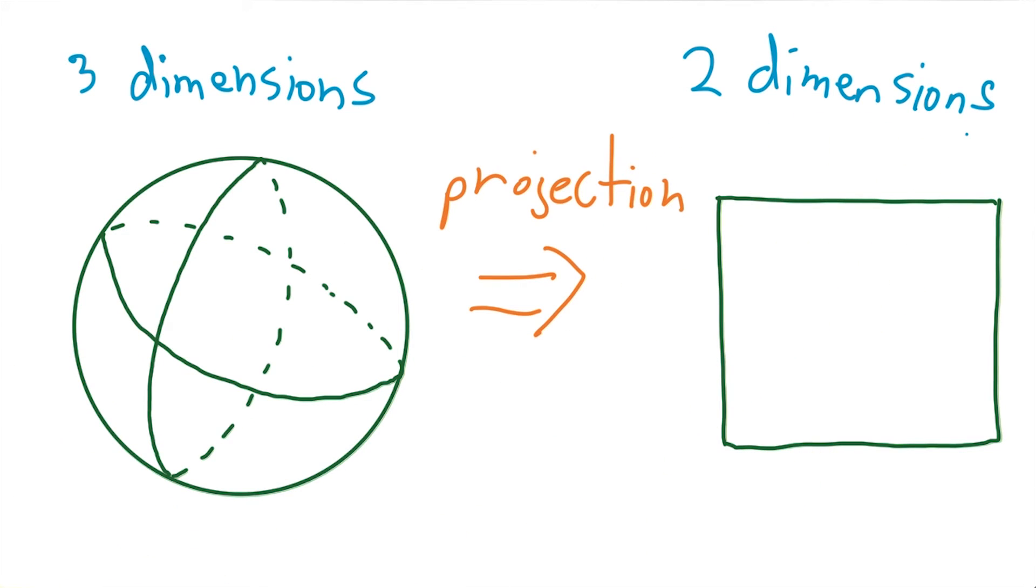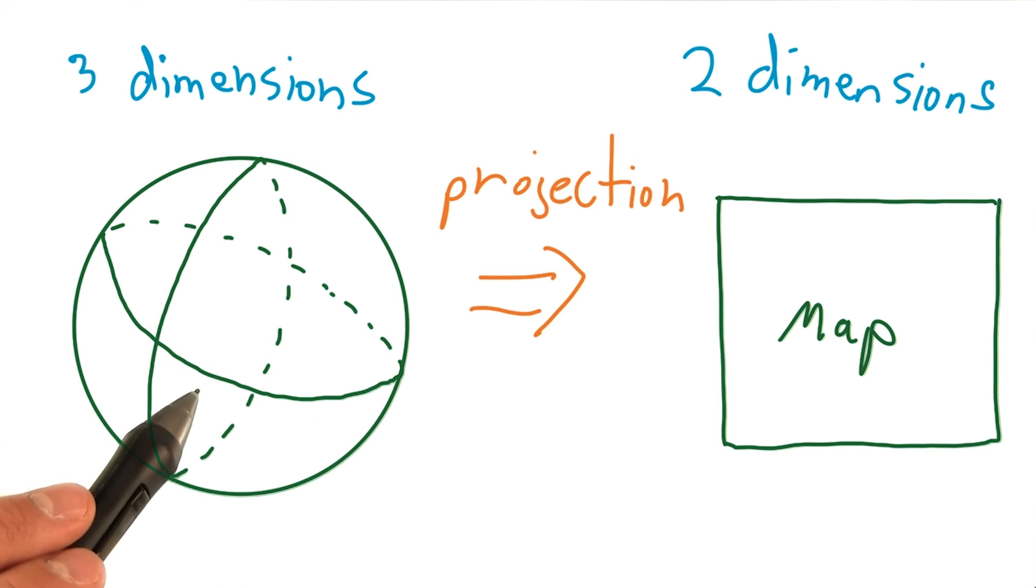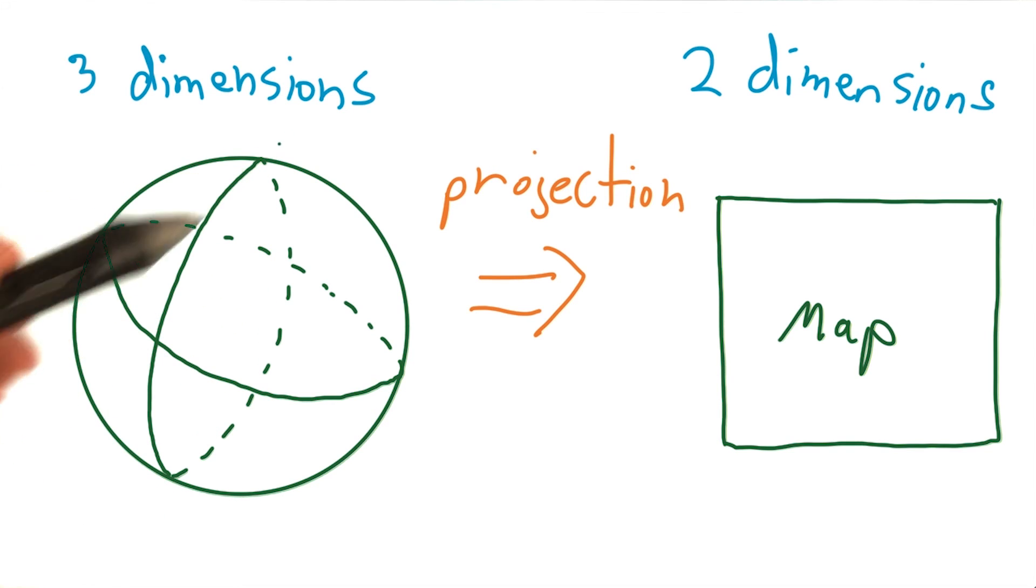So when you're going from a three-dimensional globe to a two-dimensional map, the question then becomes, where do we distort our map? And what's often done depends on the region of geographic interest. If you're only looking at countries on the equator, you want to try to best preserve the spatial representation around the equator, and you might be willing to distort near the poles.